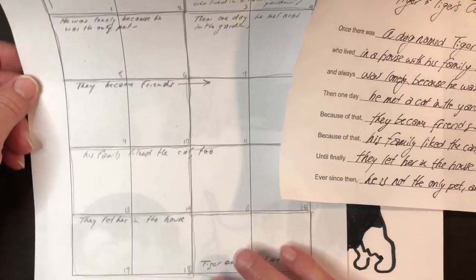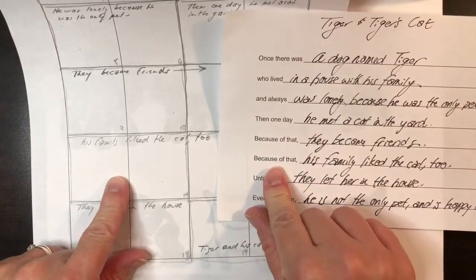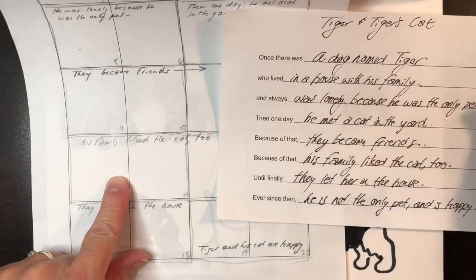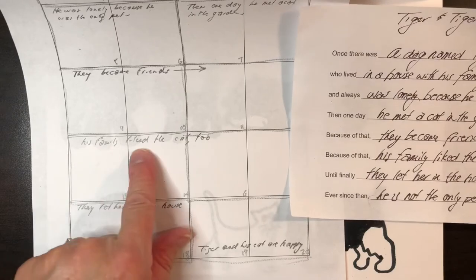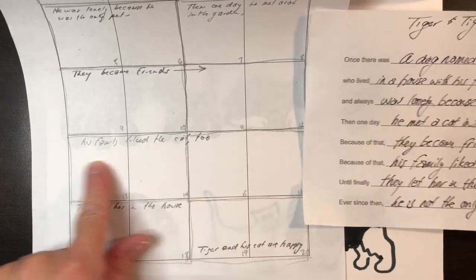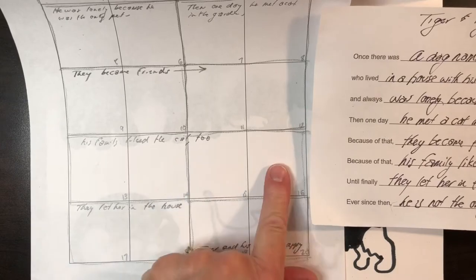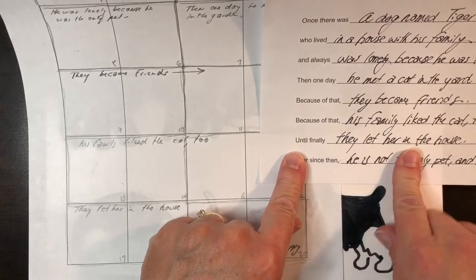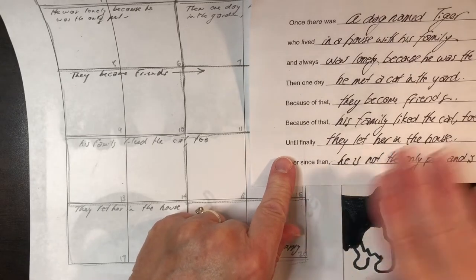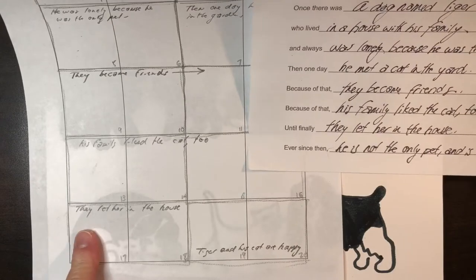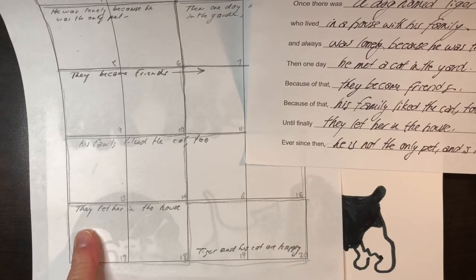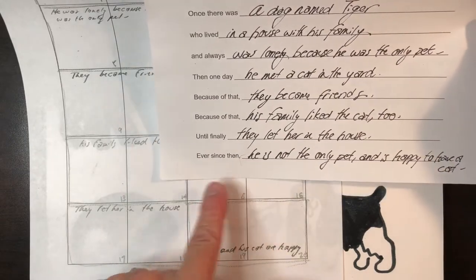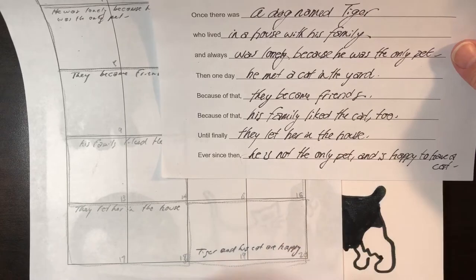The next 'because of that' — 'family liked the cat too' — is also going to take up a whole row, all four of those pages. Then the end of the book: 'until finally they let her into the house' — we take the cat in as part of the family — I'll put that near the end. And the very end, 'ever since then he is not the only pet and he is happy to have a cat,' will be in the last two squares.